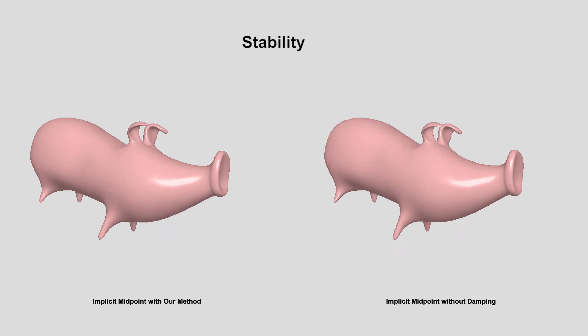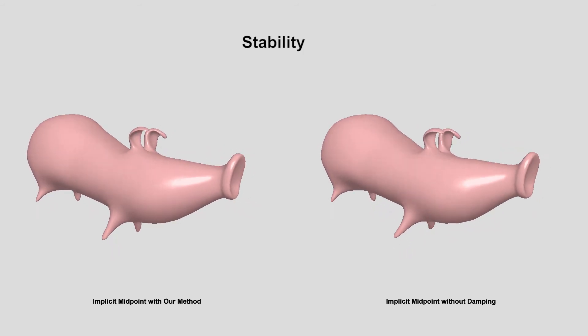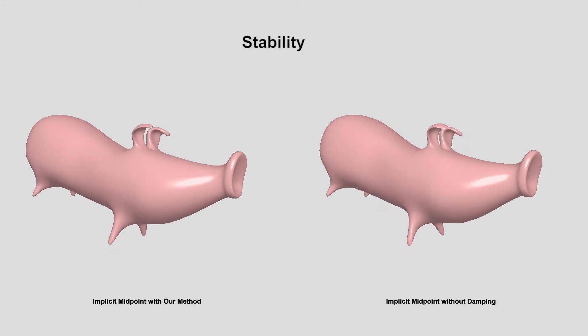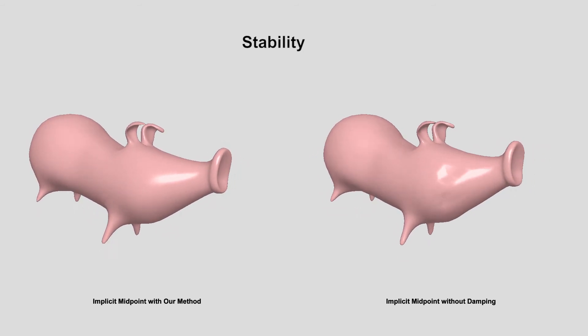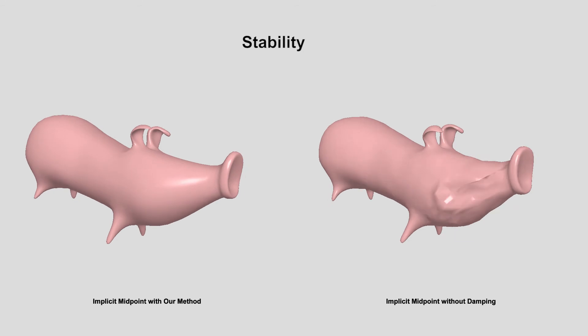Implicit midpoint does not contain artificial numerical damping, but has another problem: it can be unstable. Our damping method can be used to stabilize implicit midpoint, all within the projective dynamics framework.